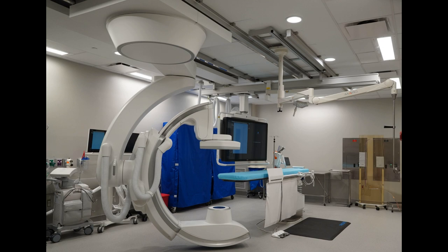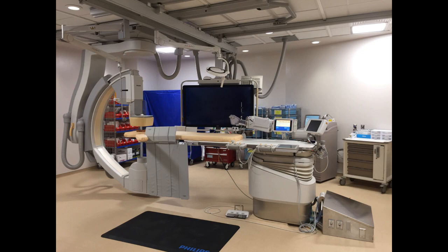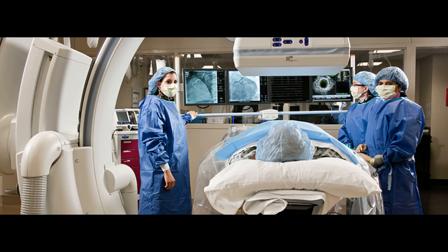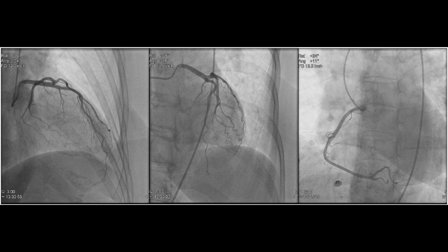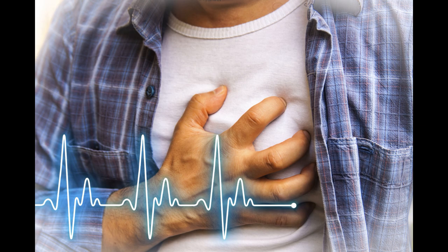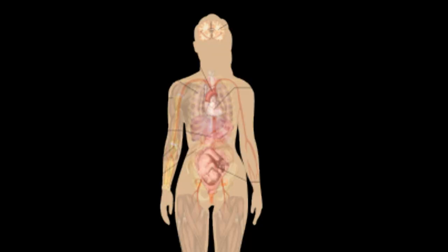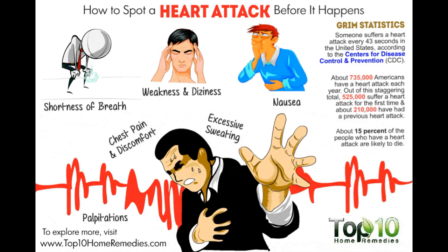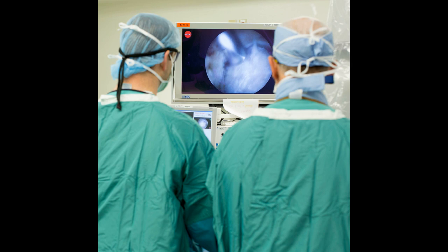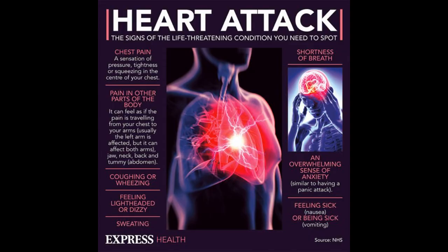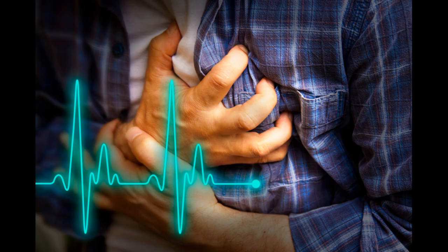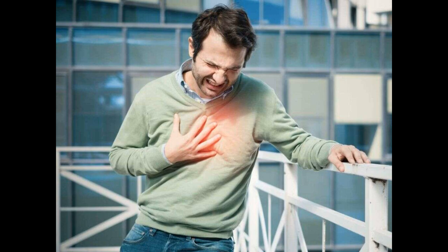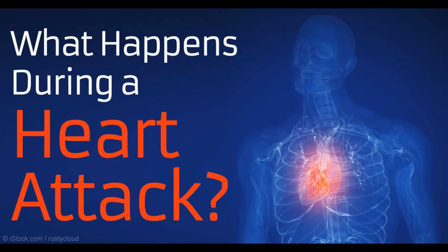The cardiac cycle. A single cardiac cycle includes all the events associated with one heartbeat. A cardiac cycle consists of systole and diastole of the atria plus systole and diastole of the ventricles. In each cardiac cycle, the atria and ventricles alternately contract and relax, forcing blood from areas of higher pressure to areas of lower pressure. When heart rate is 75 beats per minute, a cardiac cycle lasts 0.8 seconds.